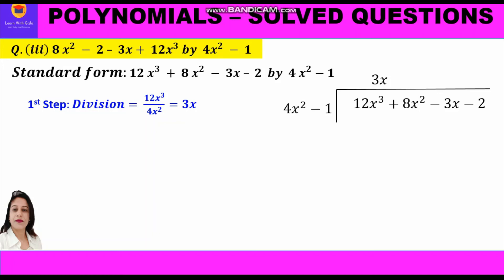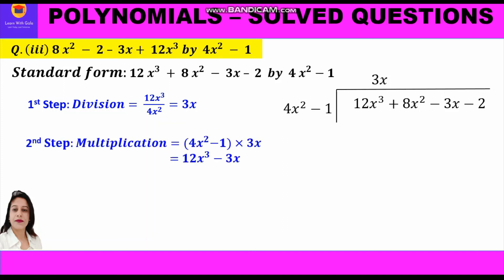Now the second step, multiplication: we multiply the divisor by the quotient, writing 4x² minus 1 into 3x, which equals 12x³ minus 3x. While writing this below the dividend, we must be careful to write like terms below like terms.